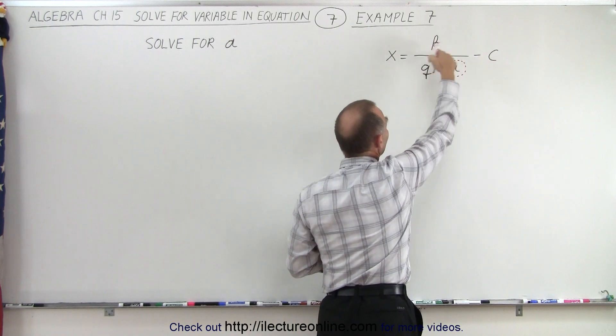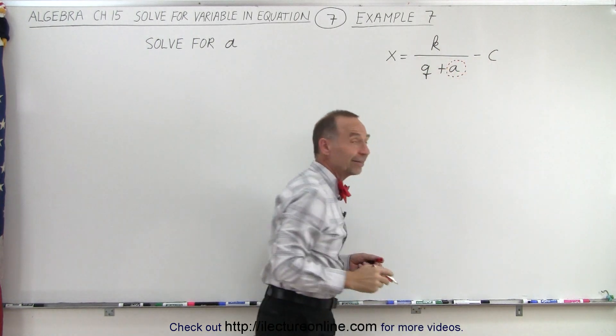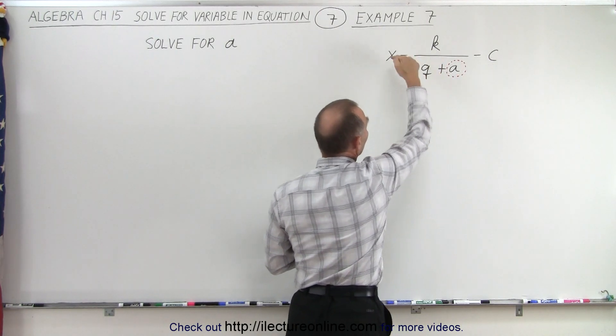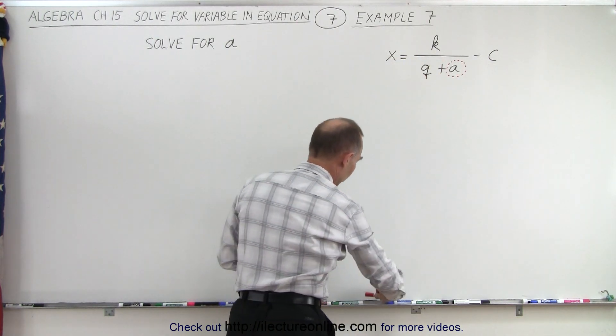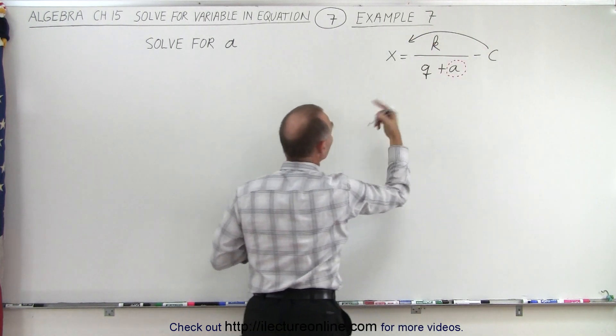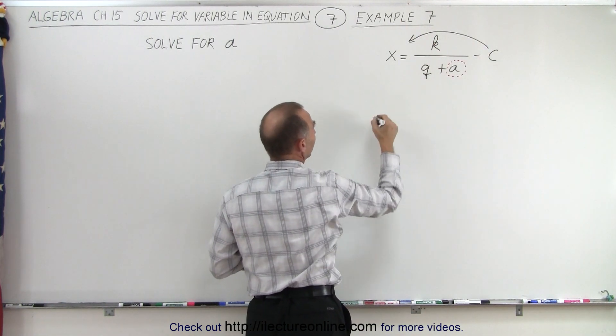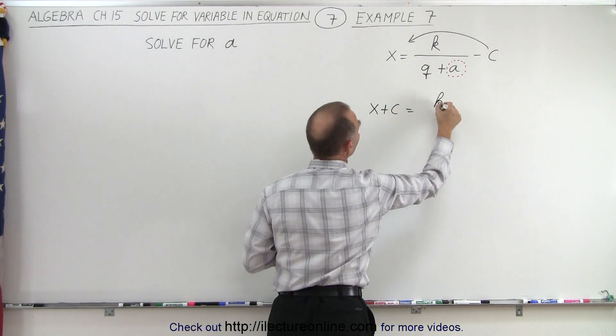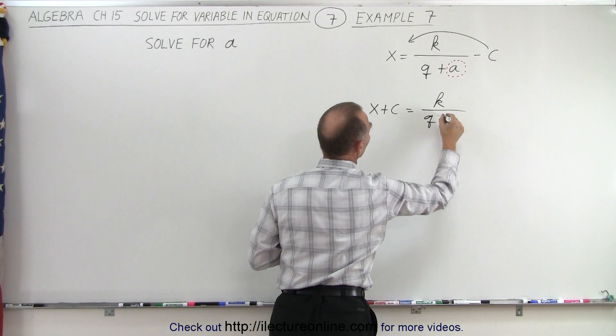Now notice we have a fraction here and minus C on the right side. Since the variable we're looking for is in the fraction, we want to get rid of the minus C and move that to the other side. The minus C moves to the left and becomes a plus C once we cross the equal sign. So this becomes X plus C equals K divided by Q plus A.